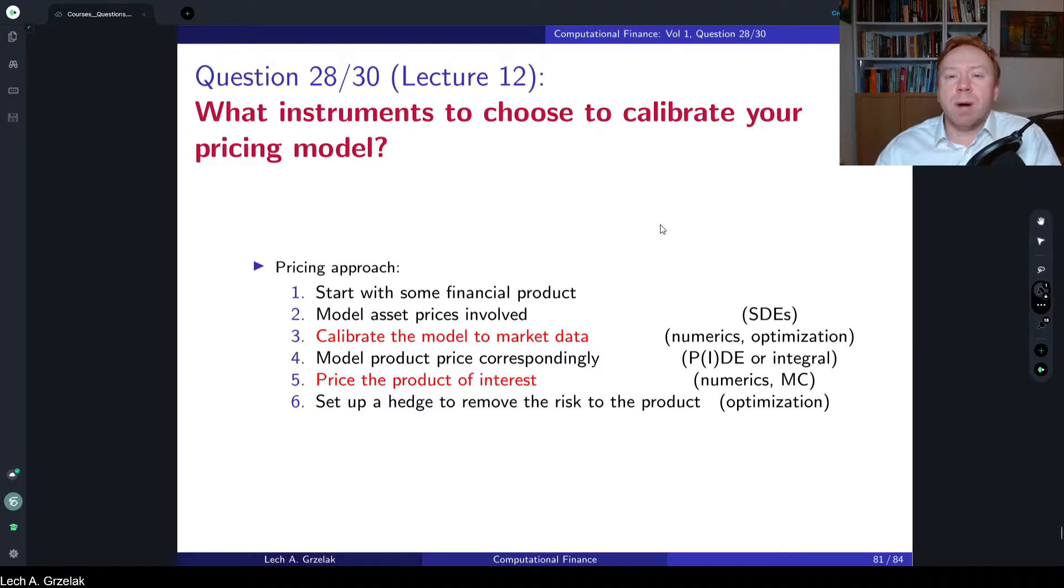This question is about a pricing exercise, so we have a system of stochastic differential equations that we would like to use for pricing of some exotic derivative. The question is how to calibrate, what instruments to choose for the calibration purposes such that we can accurately price the exotic derivative.